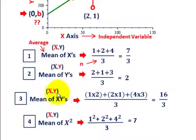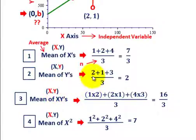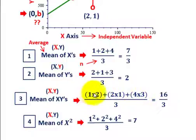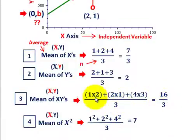Next we need the mean of the xy's, which we'll be referring to in our formula. We take each x-coordinate times its y-coordinate. For the first point, x is 1 and y is 2, so 1 times 2. Add the next coordinate: x is 2 and y is 1, so 2 times 1. Then add the next: x is 4 and y is 3, so 4 times 3. Divide by n, which is 3. The numerator is 2 plus 2 plus 12, giving us 16. So the mean of the xy's is 16/3.